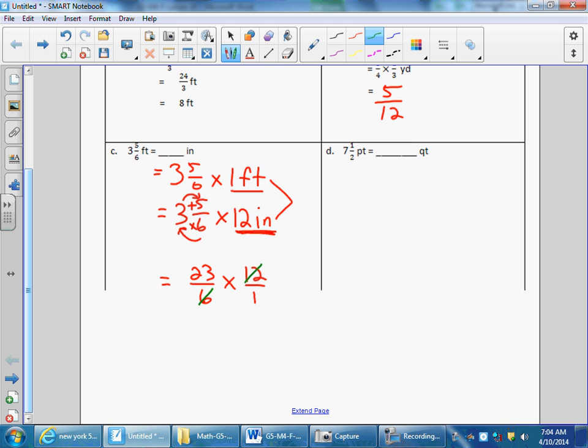I can divide six by six and get one and divide twelve by six and get two. Twenty-three and one, twenty-three and one only have a common factor of one, so they're done. I then multiply my numerators. Twenty-three times two is forty-six. And multiply my denominators. One times one is one. Three and five-sixths feet equals forty-six inches.